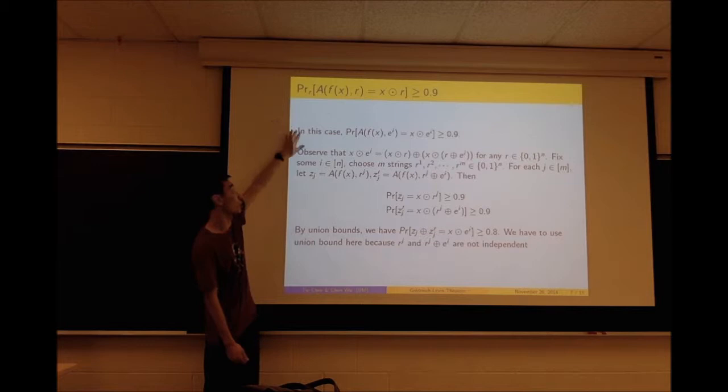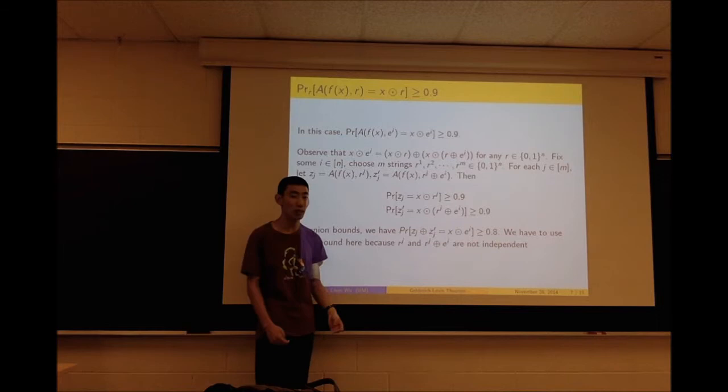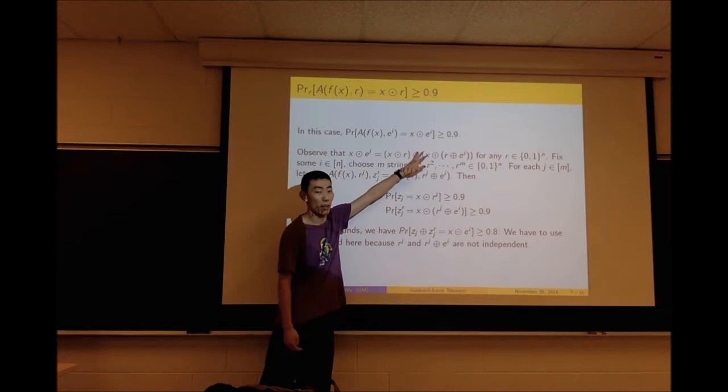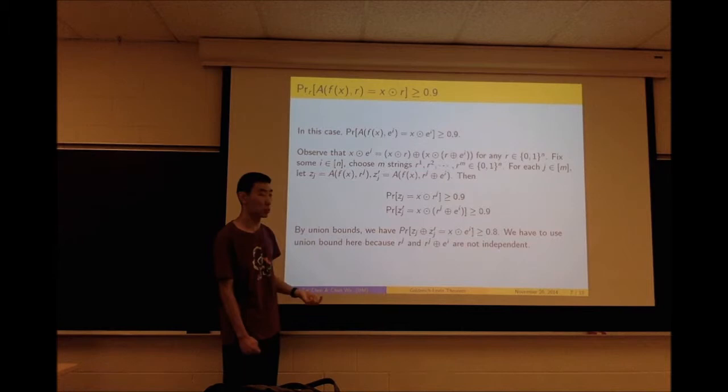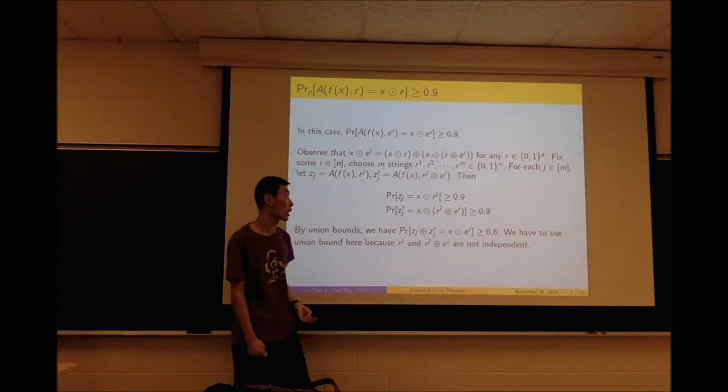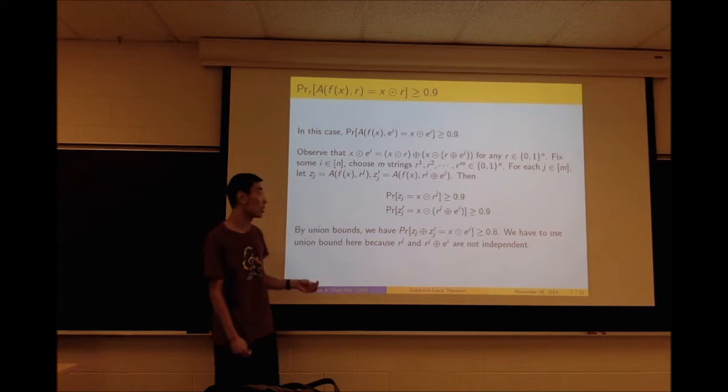Now let's consider the second condition, where the probability over r that A(f(x), r) equals x dot r is greater than 0.9. If we use the same method, the probability to recover one bit of x is 0.9, which is not good enough to recover the entire x with probability at least 0.9. To achieve that, we need the probability to recover one bit of x to be at least 1 − 1/(10n).